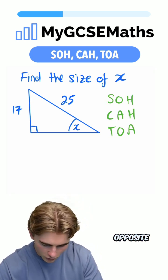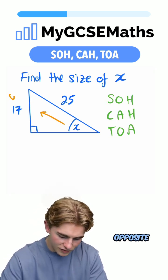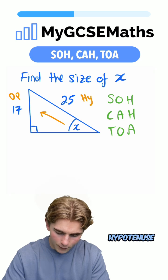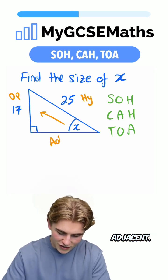Let's label our side lengths. Opposite the angle, we have the opposite side. Opposite the right angle, we have the hypotenuse, and the other side is the adjacent.